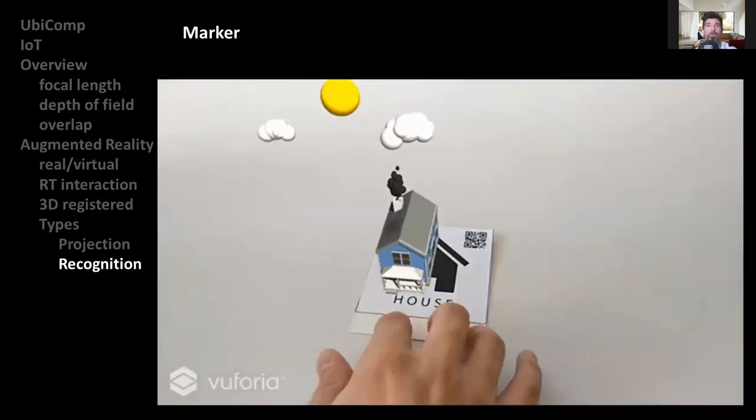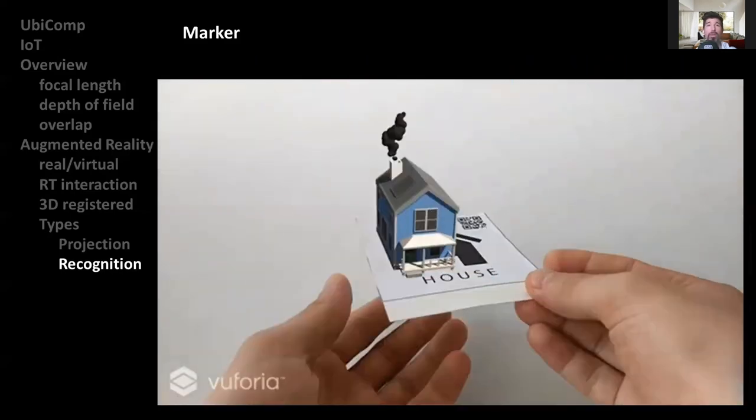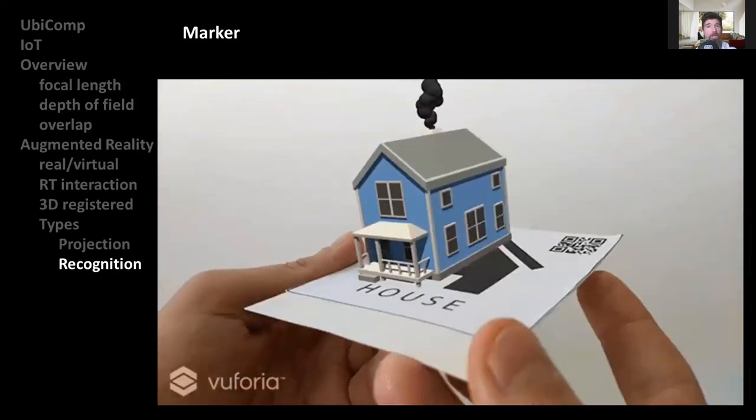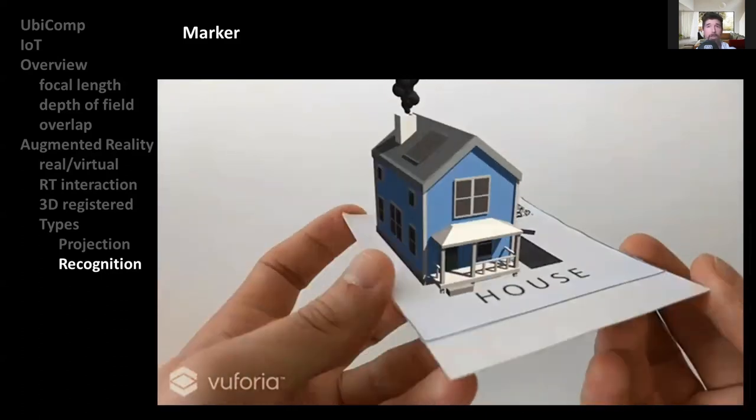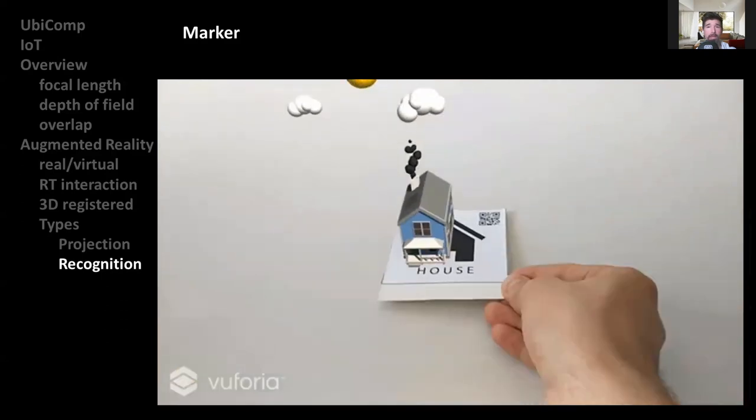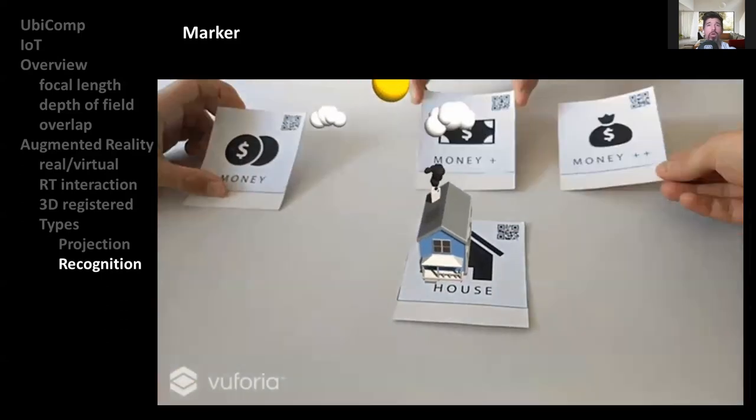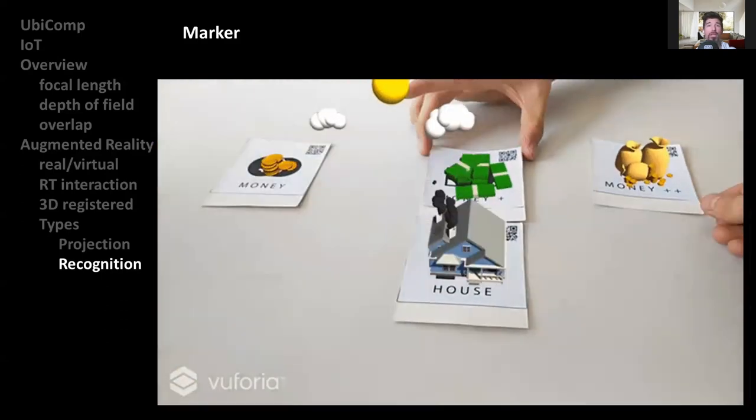In this example, we can see the use of several markers that contribute to the main virtual element of the house, causing it to be larger or smaller, depending on the amount of money that is added, which is to say, depending on the correlation of the markers in the vicinity of one another.